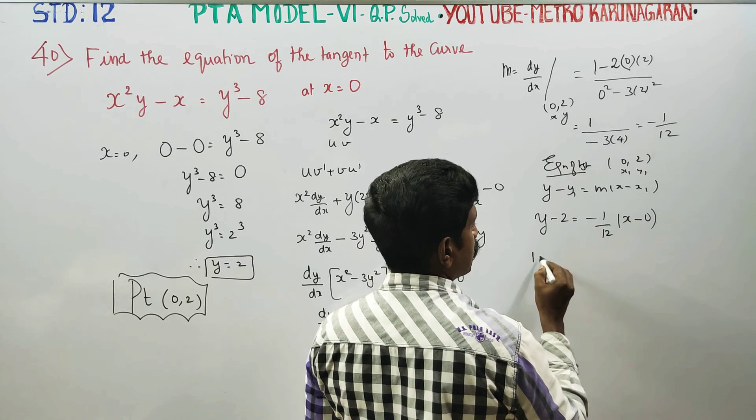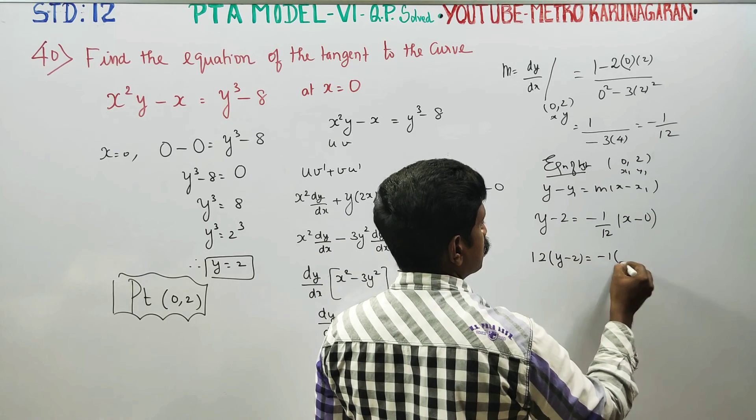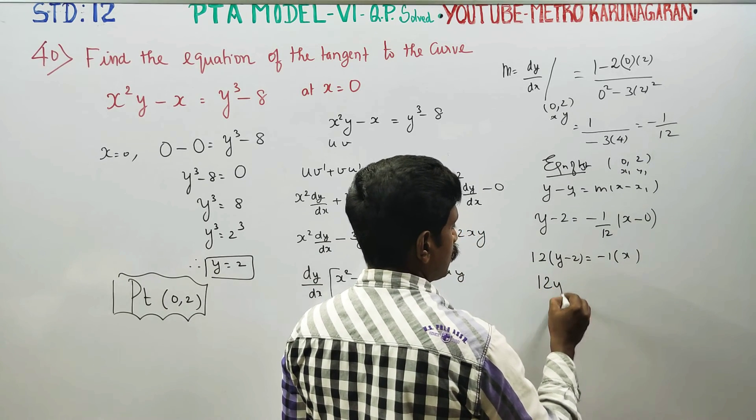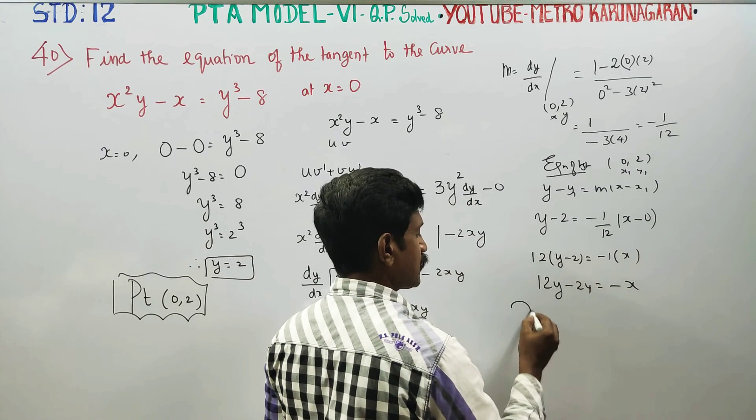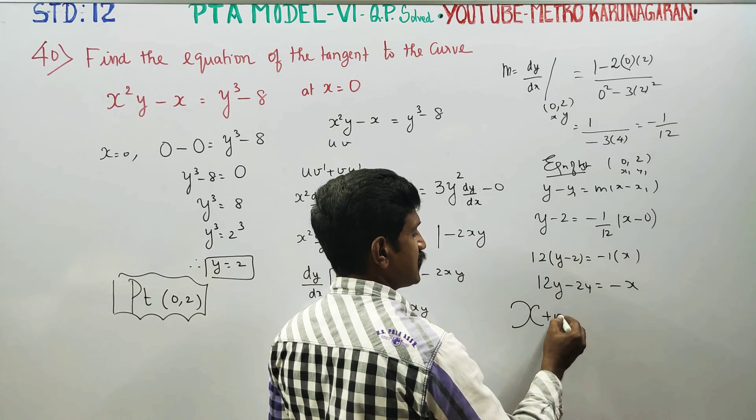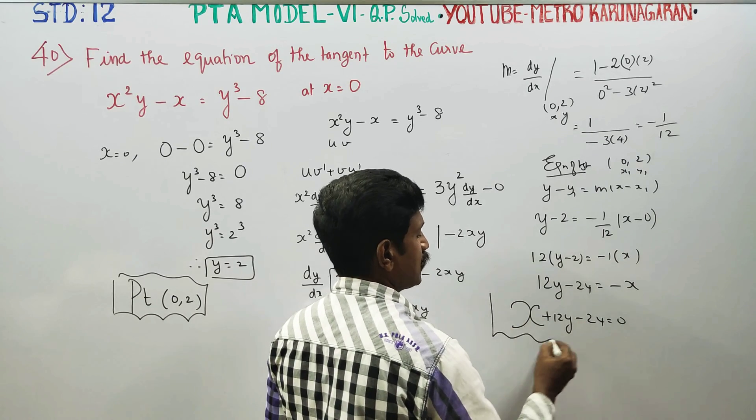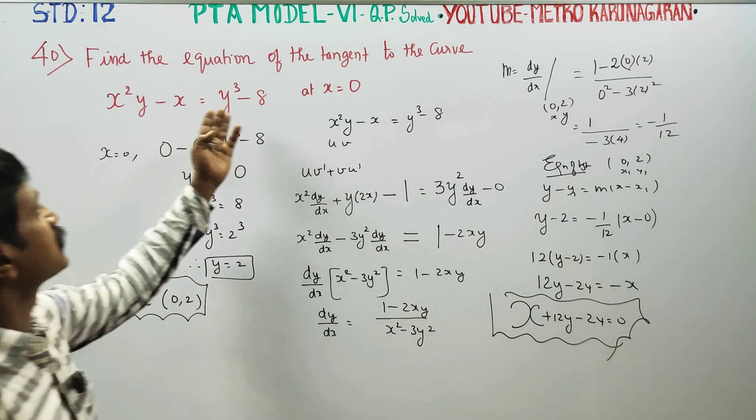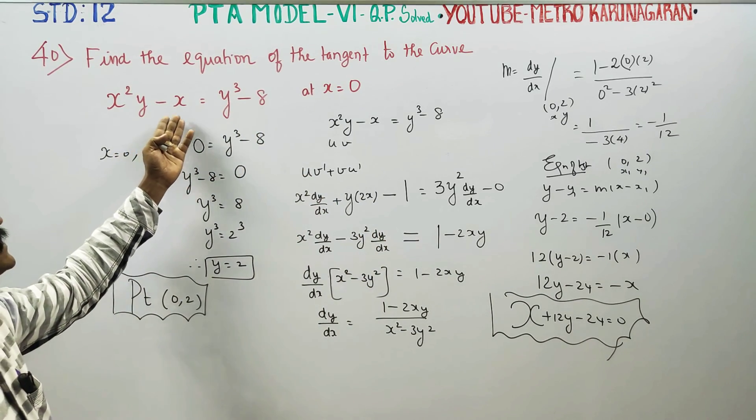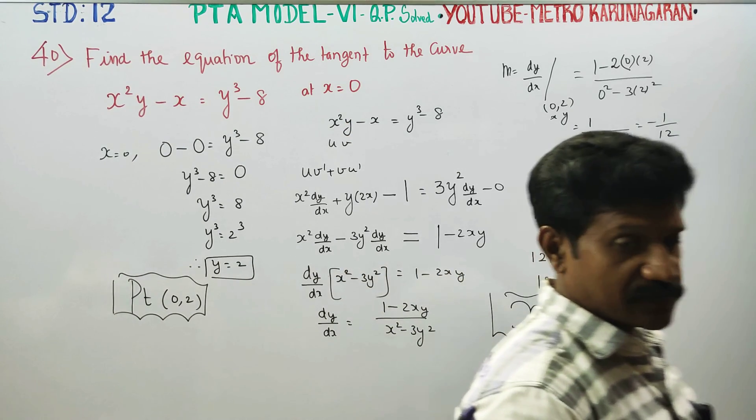Cross multiply: 12 into y minus 2 is equal to minus 1 into x. 12y minus 24 is equal to minus x. Bringing minus x to the other side: x plus 12y minus 24 is equal to 0 is the equation of the tangent to this curve x squared y minus x equals y cube minus 8 at x equals 0.